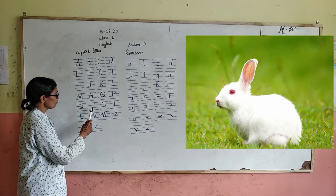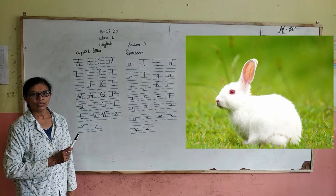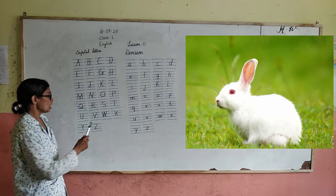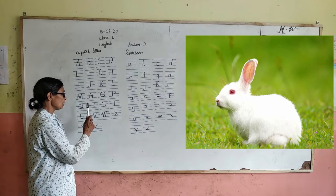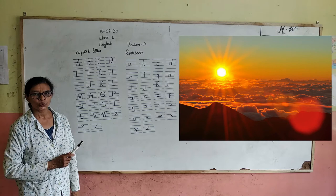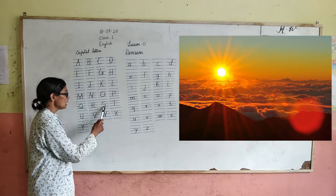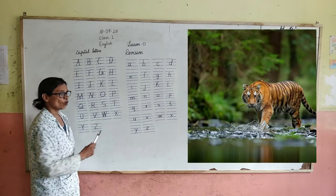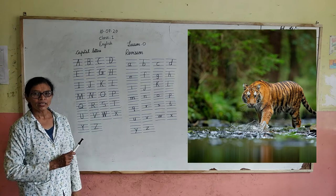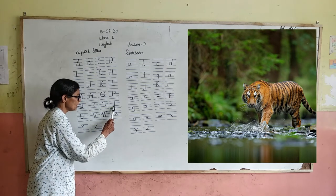R for rabbit — R-A-B-B-I-T, rabbit. S for sun — S-U-N, sun. T for tiger — T-I-G-E-R, tiger.